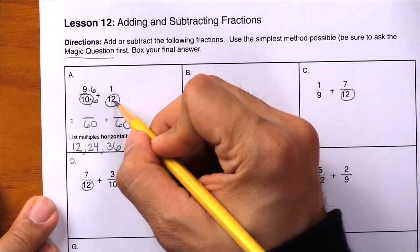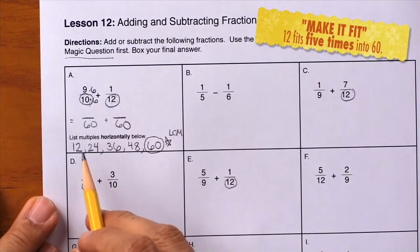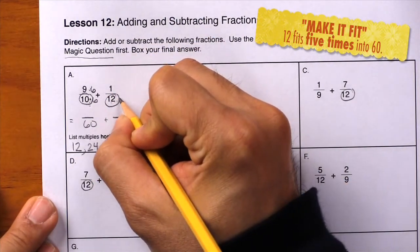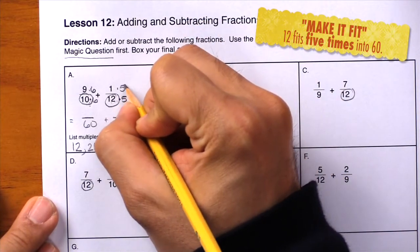Next, how did we get from 12 to 60? We multiplied by 5. You can see here, 1, 2, 3, 4, 5. Times 5 in the denominator, times 5 in the numerator.